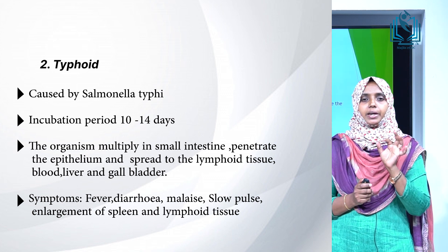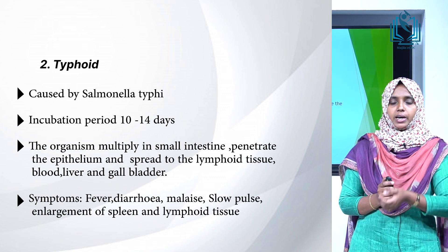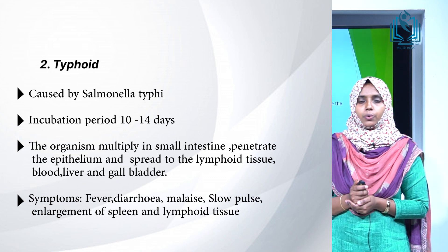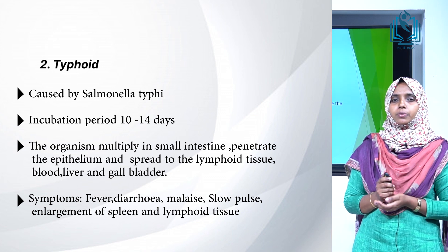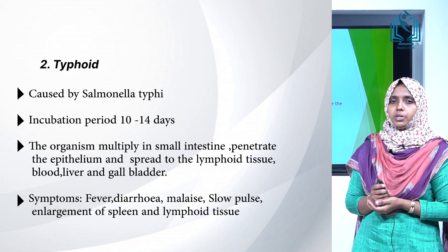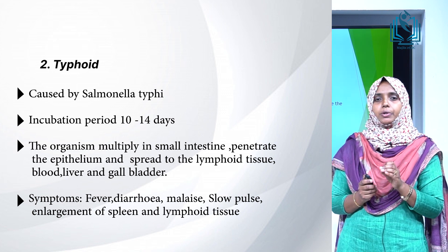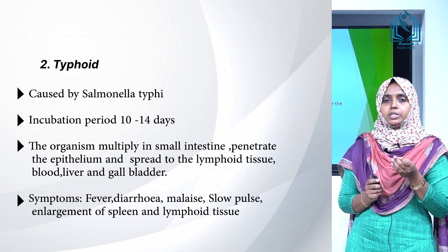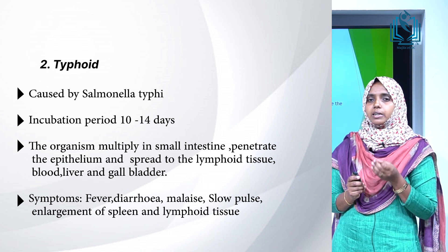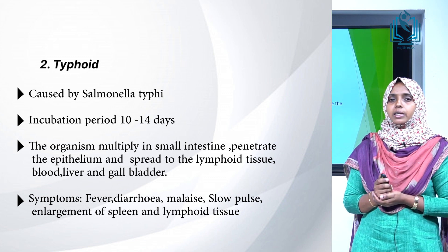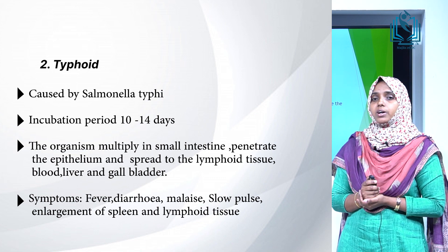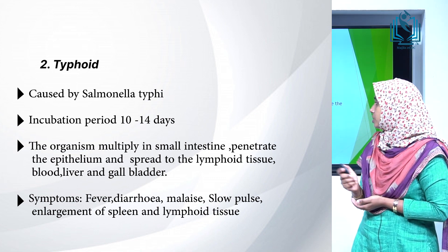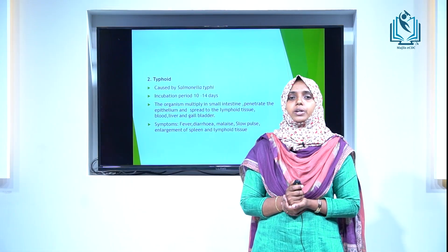Typhoid is caused by Salmonella typhi, a gram-negative motile organism with an incubation period of 10 to 14 days. The organism enters the small intestine, multiplies, and penetrates the intestinal epithelium, spreading to lymphoid tissue, blood, liver, and gallbladder. Symptoms include fever, diarrhea, malaise, and enlargement of the spleen and lymphoid tissue.